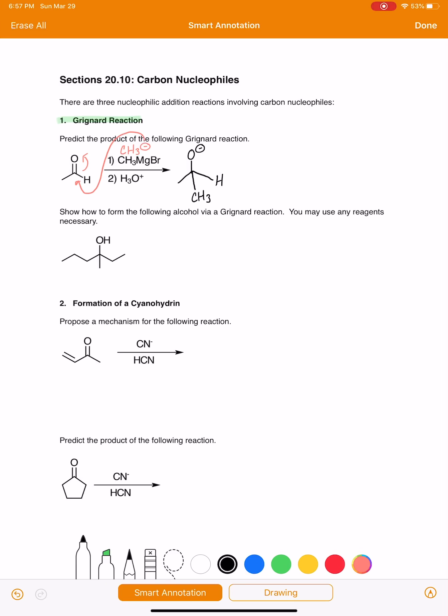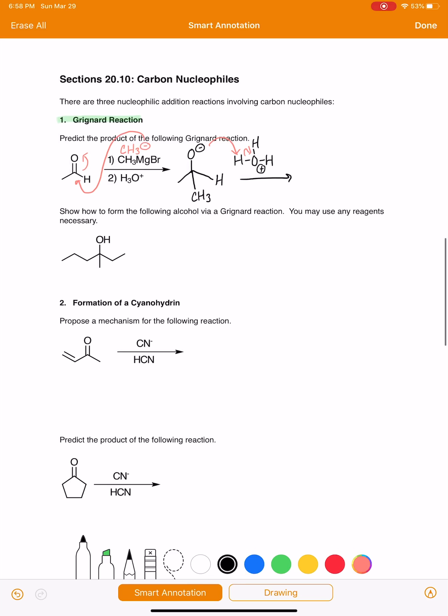And then our second step where we have H3O plus in this particular example, all that we're doing here is protonating the O minus. And this forms, as you know, this forms an alcohol.